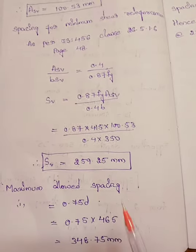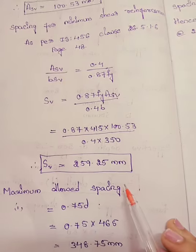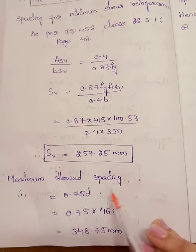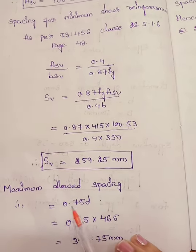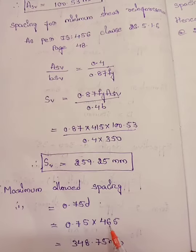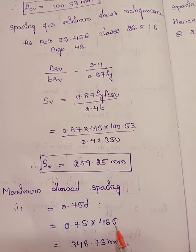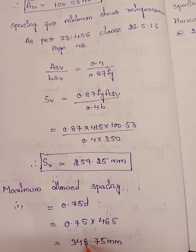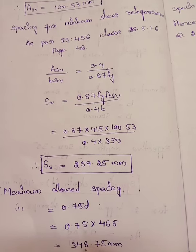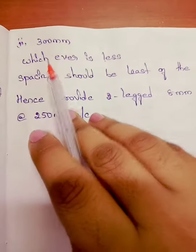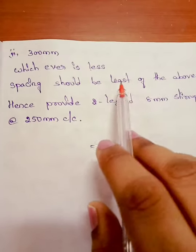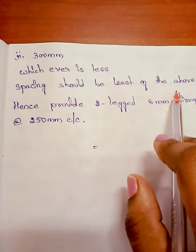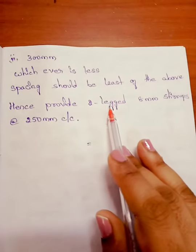This gives the calculated spacing, but as per codal provisions the maximum allowed spacing is 0.75d or 300 mm, whichever is less. So 0.75 × d = 0.75 × 465 = 348.75 mm, and the other limit is 300 mm. Whichever is less, that spacing should be adopted.